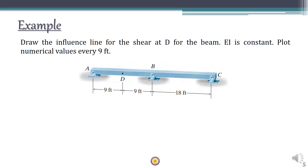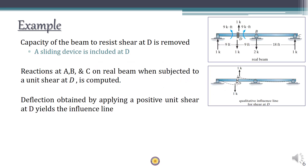With this background, consider an example: a two-span continuous bridge, meaning indeterminacy is 1. We are asked to find the ILD for shear force at location D, which is the mid-span of span AB. At D we consider a sliding device and apply a positive unit shear — one downward on the left-hand side and one upward on the right-hand side. This effectively gives us two separate beams, and we must satisfy equilibrium to find reactions at each support.